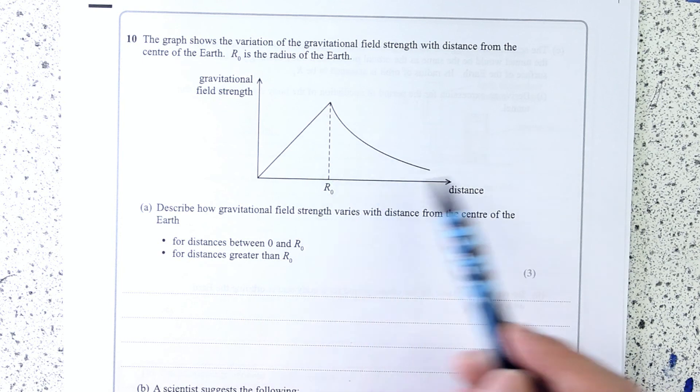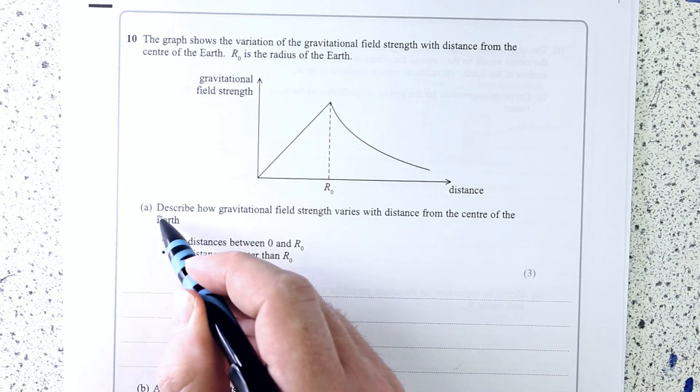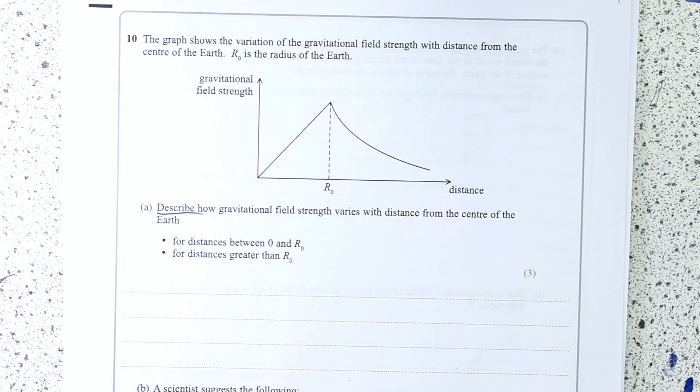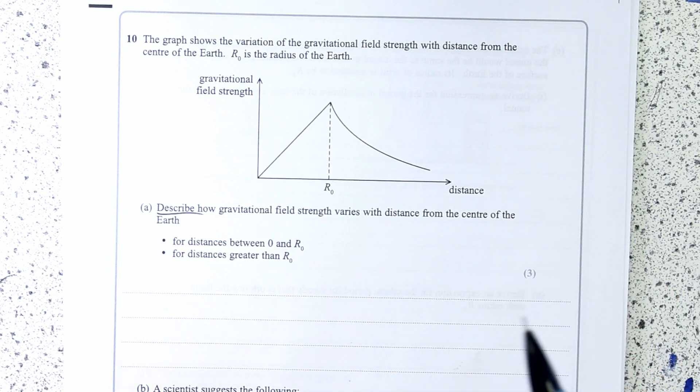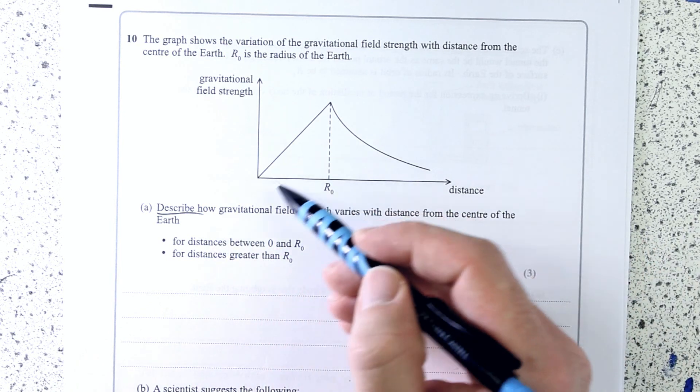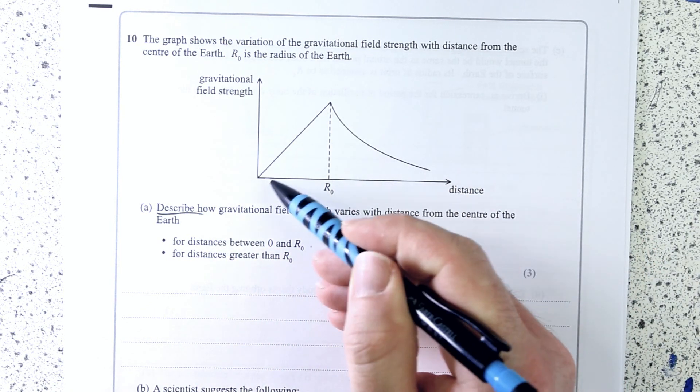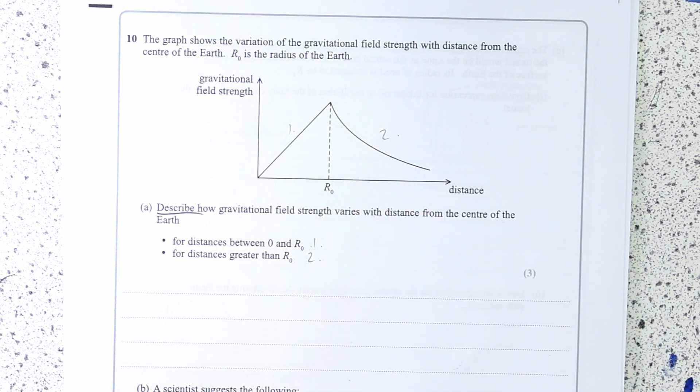But it's quite an interesting graph because there's two kind of relationships going on. Describe how gravitational field strength varies with distance from the centre of the Earth. It's not explain why, it's describe how. So actually, forget everything, forget using any equations at all. Just tell us what's the trend up until here. What's the trend after here?